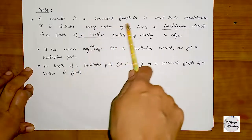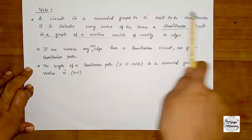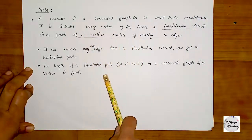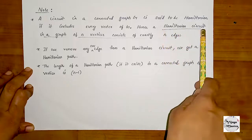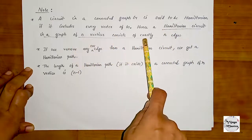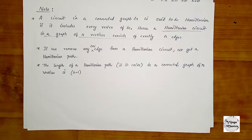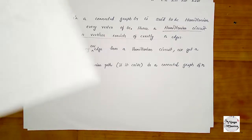A circuit in a connected graph G is said to be Hamiltonian if it includes every vertex of G. Hence a Hamiltonian circuit in a graph of N vertices consists of exactly N edges. If we remove any one edge from the Hamiltonian circuit, we get a Hamiltonian path.